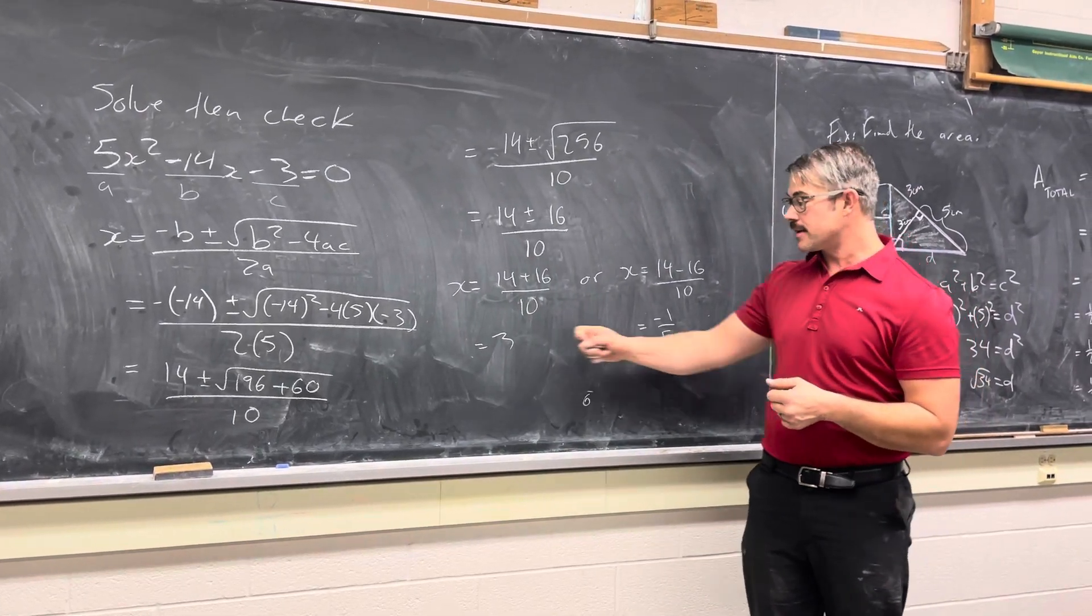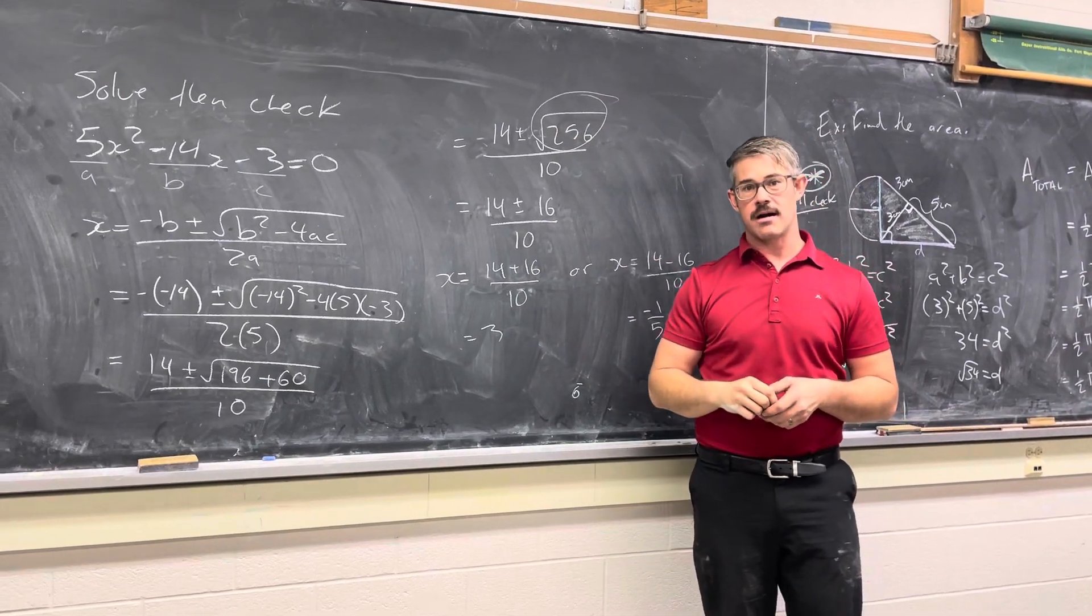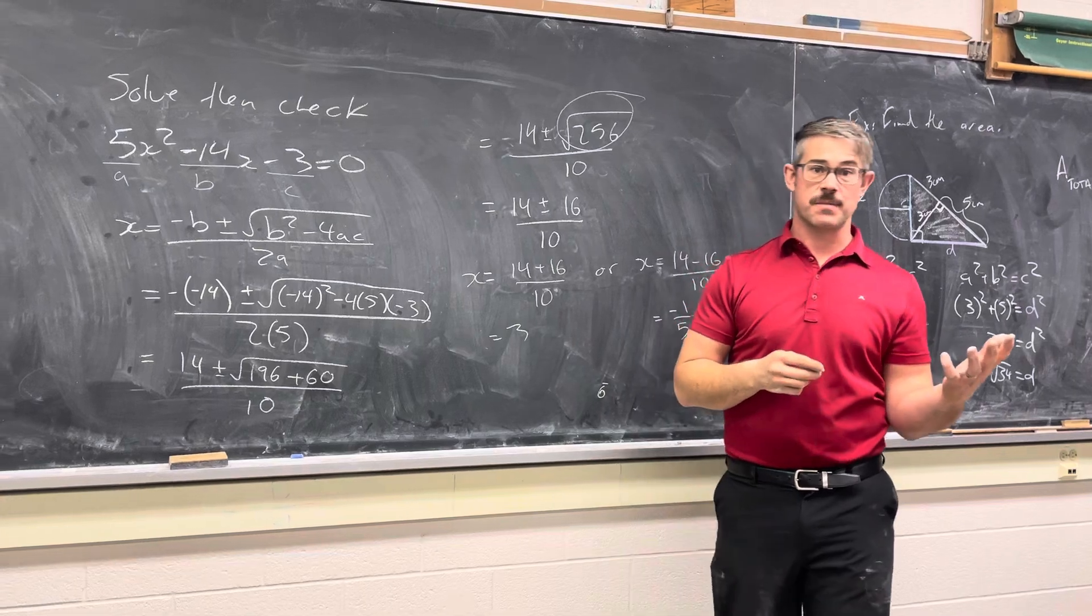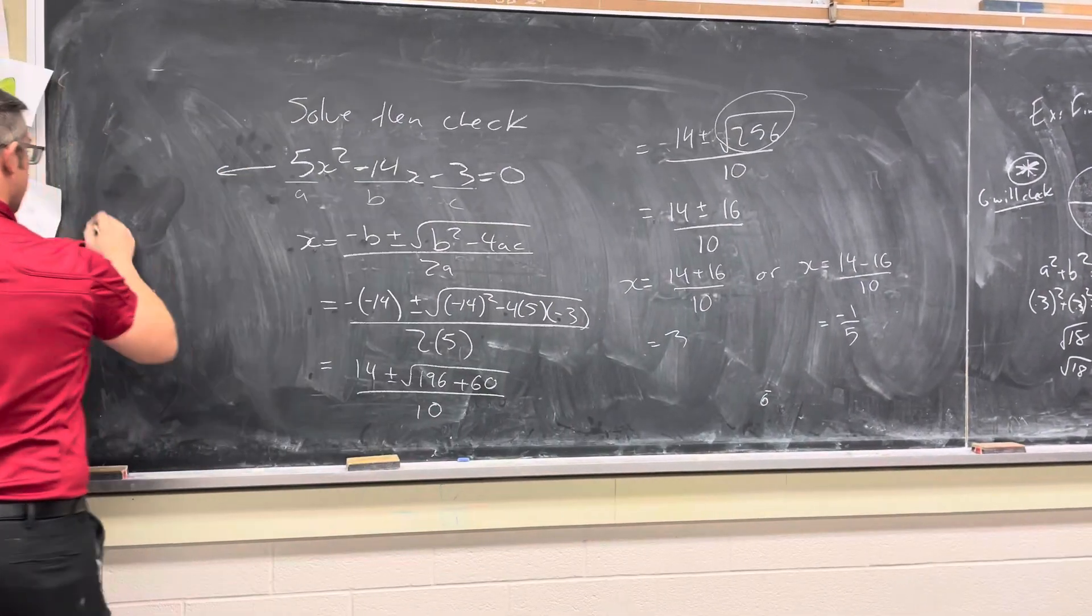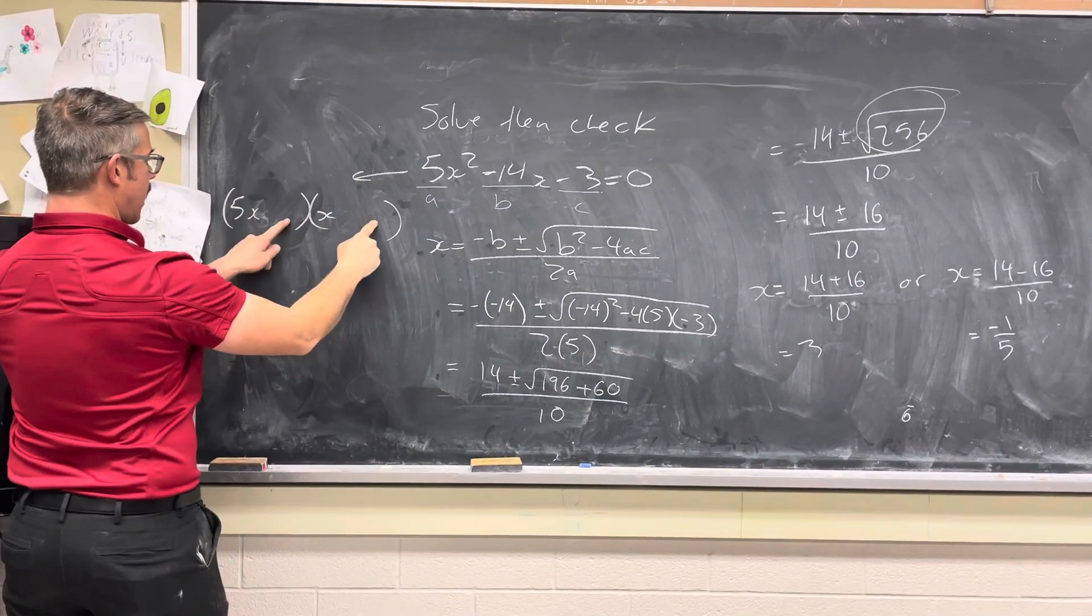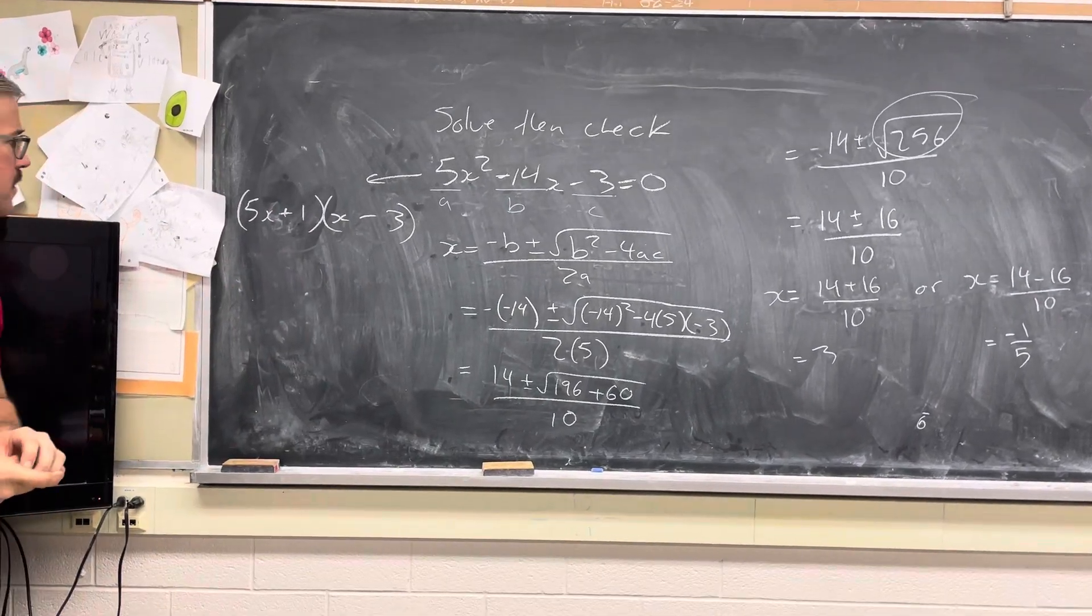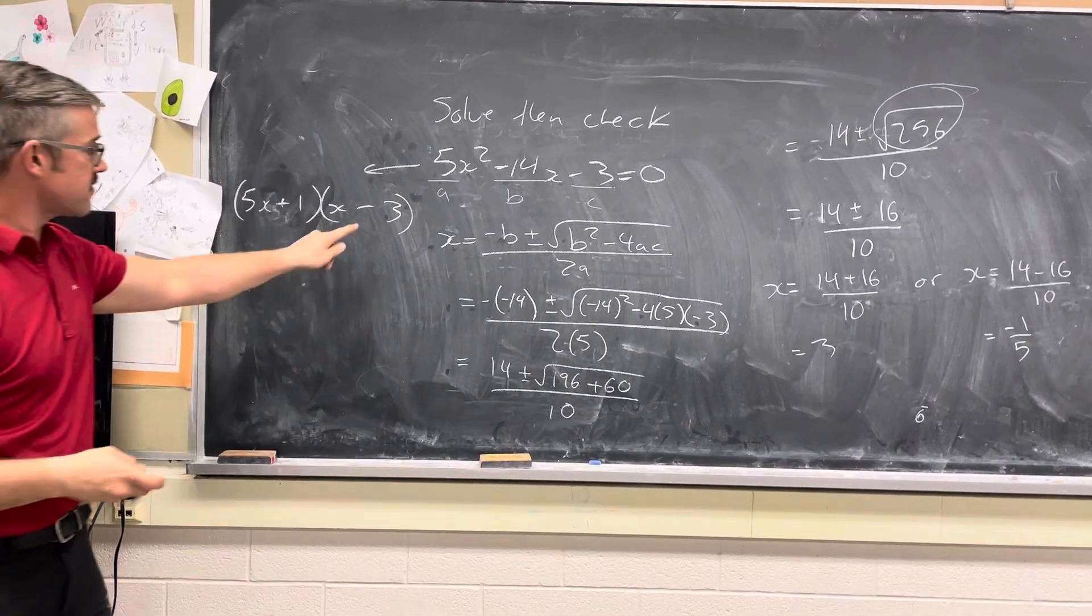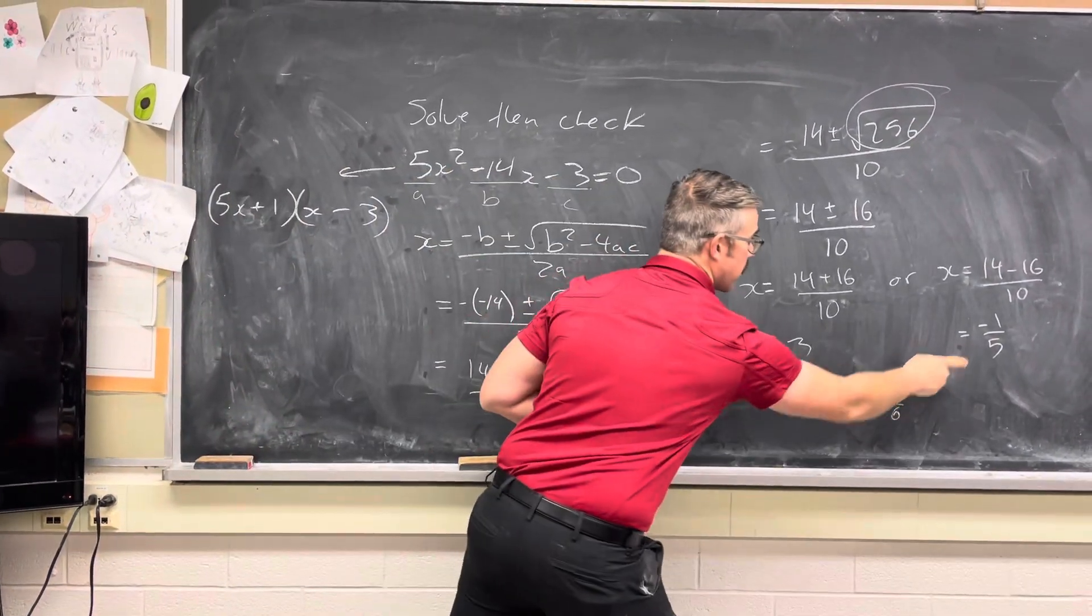Because it worked out to nice, neat numbers, and in fact, because this number here worked out to be a perfect square, it's highly likely we could have solved this by factoring. If you go back and factor this original problem, it's going to factor nicely as 5x plus 1 and x minus 3, which gives us the same roots: x equals 3 and x equals negative 1 over 5.